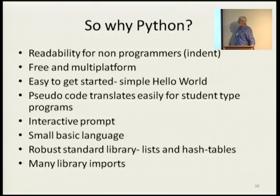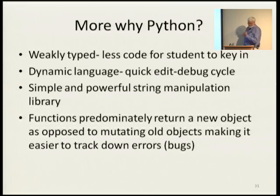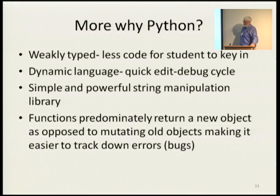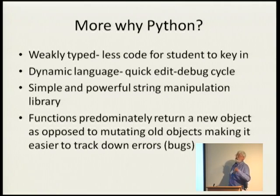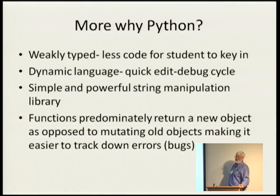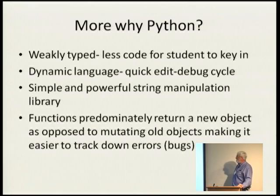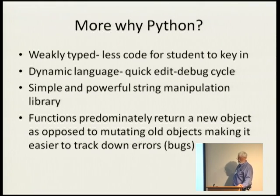You've got a ton of library imports — like PyGame, Panda 3D. More reasons for Python: weakly typed means less code for students to key in and worry about, making it easier to learn. It's a dynamic language — basically it doesn't compile, you just run it and have a quick edit-debug cycle. It's got a simple and powerful string manipulation library. Your functions predominantly return a new object — most of the time a function will return a new object and erase the old one, which makes it easier to track down bugs when you're first getting started.